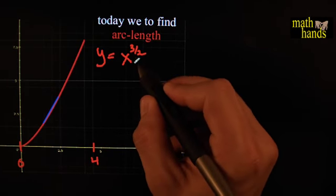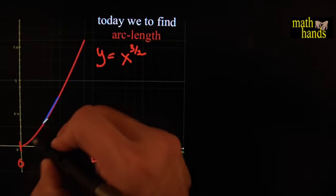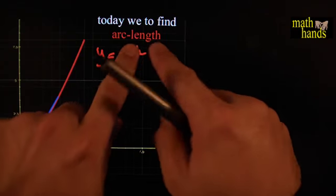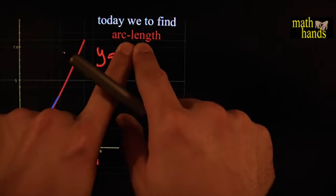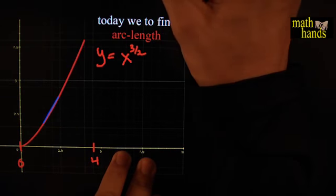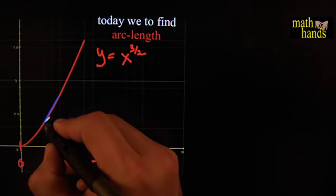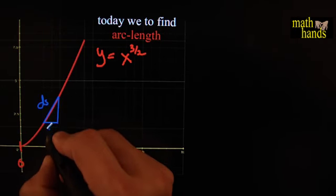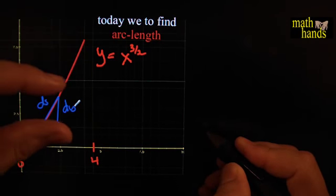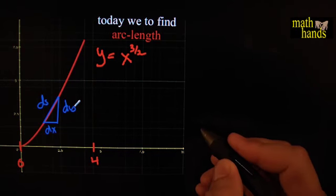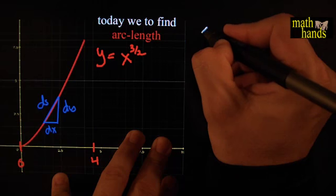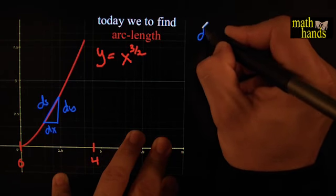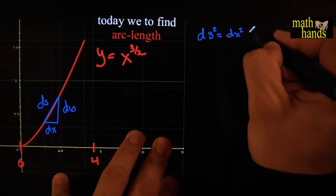If you have the curve y = x^(3/2), going from 0 to 4, we want to find out how long this curve is — as if you curved a measuring tape along it. That's what the fancy name 'arc length' means. We make a small right triangle with sides dx, dy, and ds, and write the Pythagorean theorem: ds² = dx² + dy².